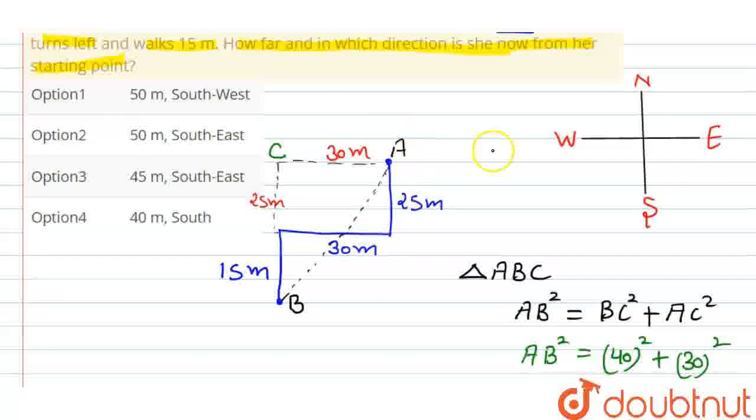And direction. If we talk about direction, this is the starting point. Then, this figure is pointed here. Which direction? South-West. That is, southwest. So, this is the direction, that is southwest. And distance, 50 meter. So, let's check in the option. Option first, that is 50 meter distance, Southwest.